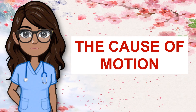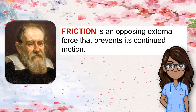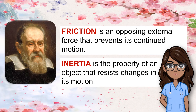Moving on, let's discuss the cause of motion. For many years, the accepted opinion was Aristotle's concept that moving objects would stop because the natural state of objects was to be at rest. However, for Galileo, once the ball is in motion, no force is needed to keep it moving except the force needed to overcome friction. Friction is an opposing external force that prevents its continued motion. A moving object needs no force to keep it moving when friction is absent — it will remain in motion all by itself. All objects tend to resist changes in motion, meaning they all have inertia. Inertia is the property of an object that resists changes in its motion.